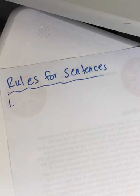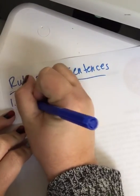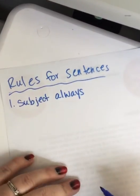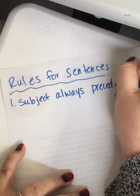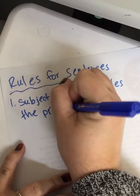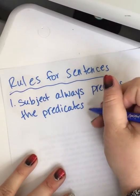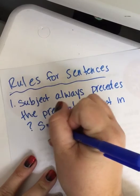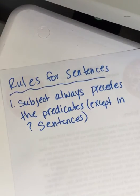Now, some of these are going to be things that you already know but maybe have never really considered. And some of it might be new information. So, the first thing is: the subject of a sentence. In the English language, remember, nothing is truly absolute — but the subject of a sentence always precedes the predicate. There's always an exception to every rule in the English language.